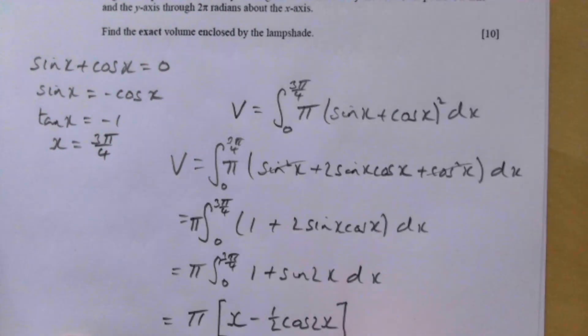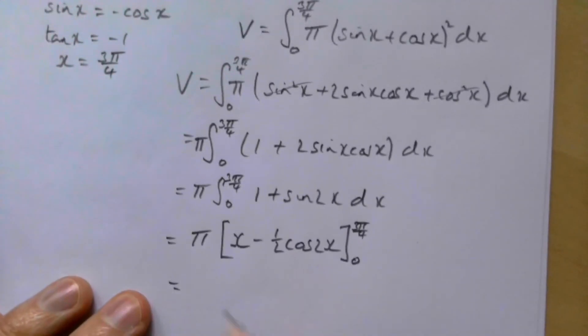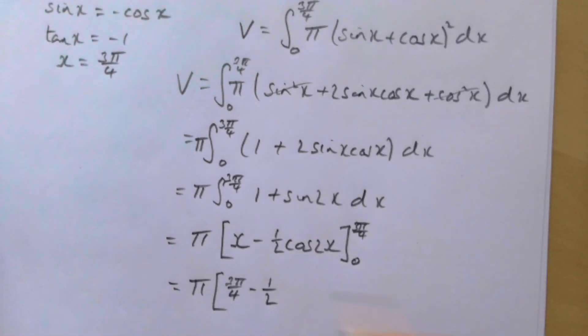And that's in between three pi over four and zero. So it's coming in at three pi over four minus a half.